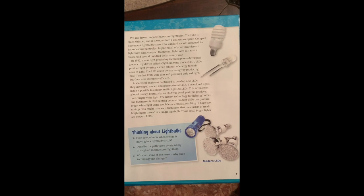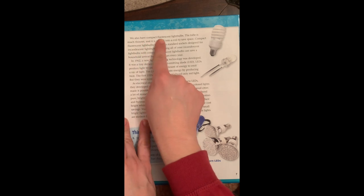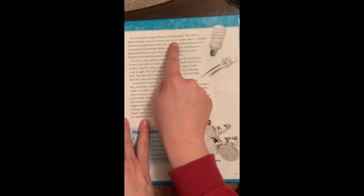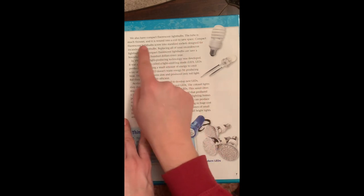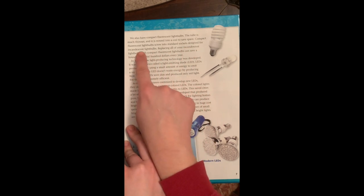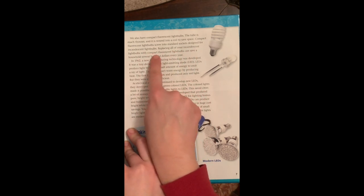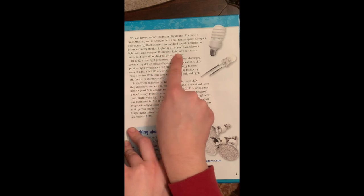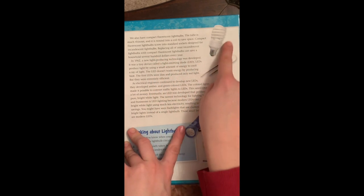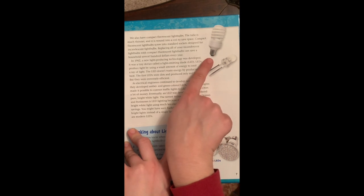So what this is saying is that an incandescent light, those were the first kind of lights that were ever invented by Edison and his group of pioneers. Well, an incandescent light burns a lot hotter and it burns a lot brighter than a fluorescent light. But it takes more energy to make an incandescent light bulb work than it does for a fluorescent light. A fluorescent light is a little bit dimmer, it's not as bright, and it's not as hot, but it uses less energy in order to create light. Let's go on to the next page. Let me zoom in a little bit, make it a little easier for us. We also have compact fluorescent light bulbs. The tube is much thinner, and it is wound into a coil to save space. Compact fluorescent light bulbs screw into standard sockets designed for incandescent light bulbs. Replacing all of your incandescent light bulbs with compact fluorescent light bulbs can save a household several hundred dollars every year. So this is what the compact fluorescent lights look like. Look around your house. Do you have any light bulbs that look like this? They're more eco-friendly.